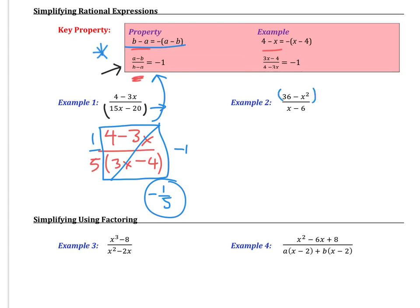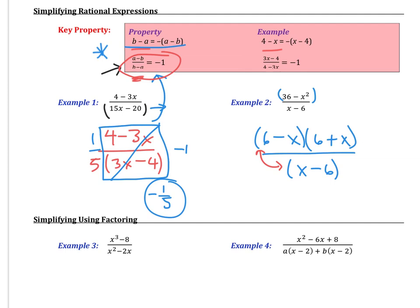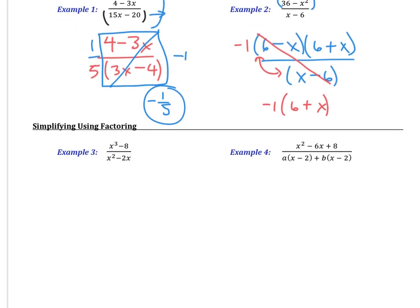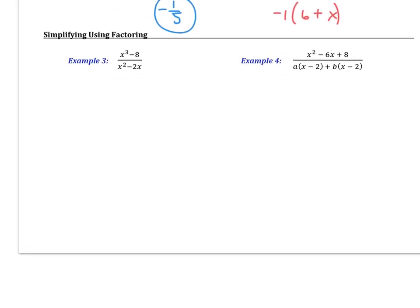In example 2, the expression 36 minus x squared is a difference of two squares, so I factor it into (6 minus x)(6 plus x), over (x minus 6). I see that 6 minus x and x minus 6 are opposites, so like the key property, I cancel them and create a negative 1. I end up with negative 1 times (6 plus x). You can distribute the negative 1 if you want. This deals with the idea of binomials that are turned around.